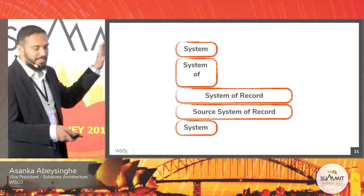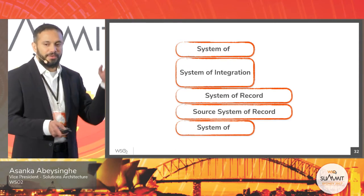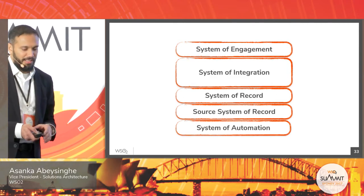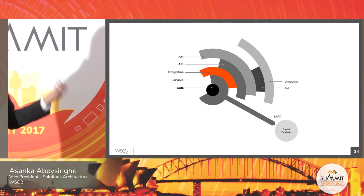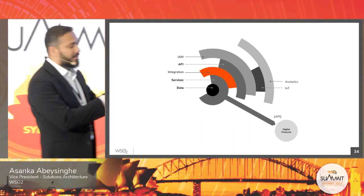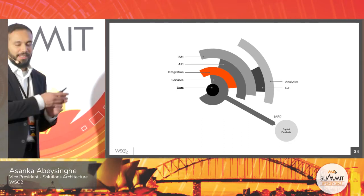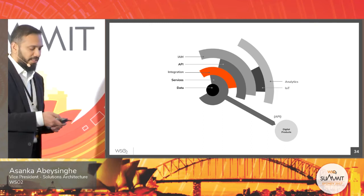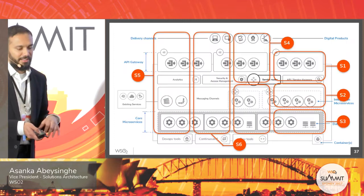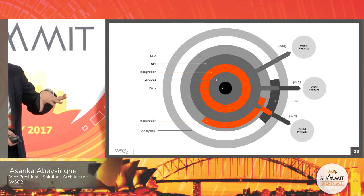You have the first iteration, and then in the second iteration you bring a little more functionality. You keep on improving your layers. Going back to the onion diagram, the first digital product might have some integration, some data, some API security, and so forth. The second project grows like that, and keeps growing until you reach the end state. That's the second approach.